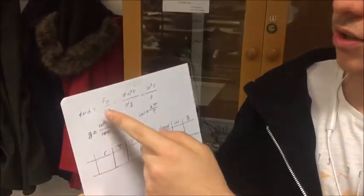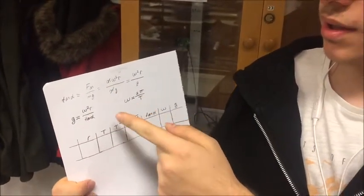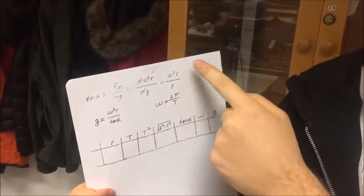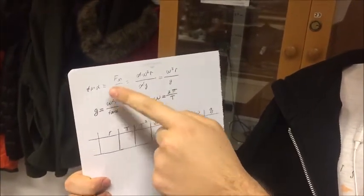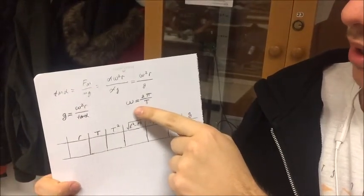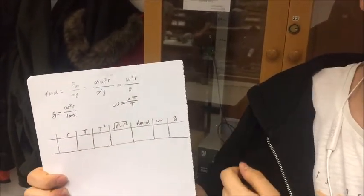We know that tangent alpha equals f centripetal over the weight of the object, and from here we found gravitational acceleration by this. We also know that omega equals 2 pi over t.